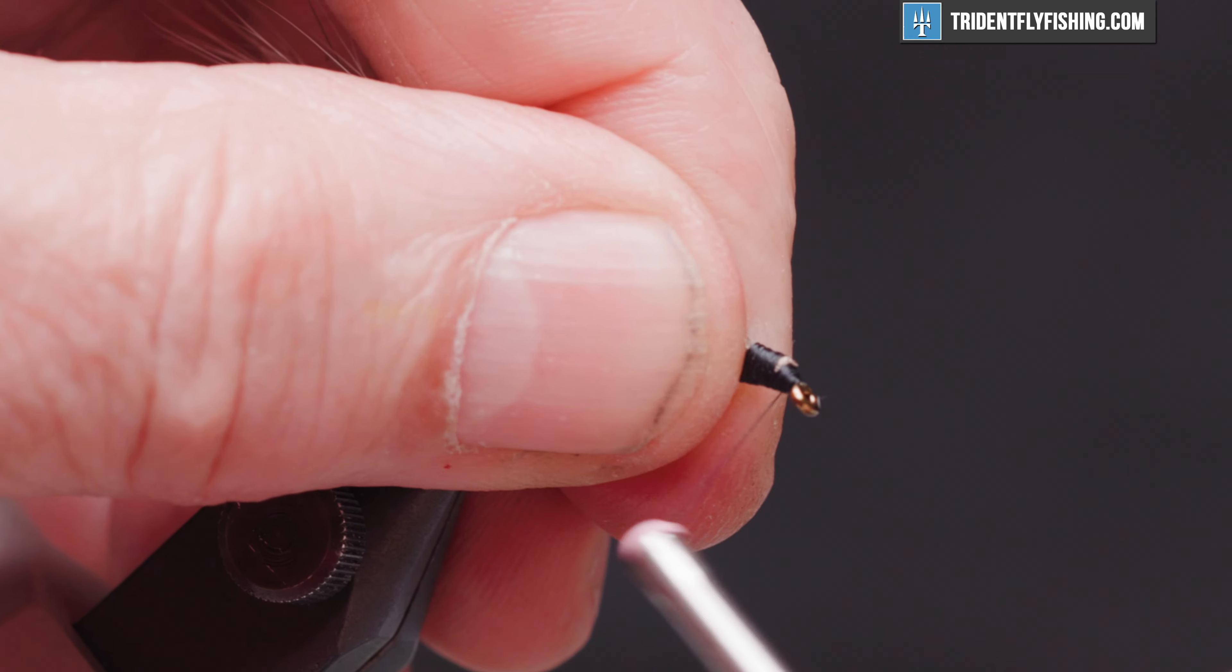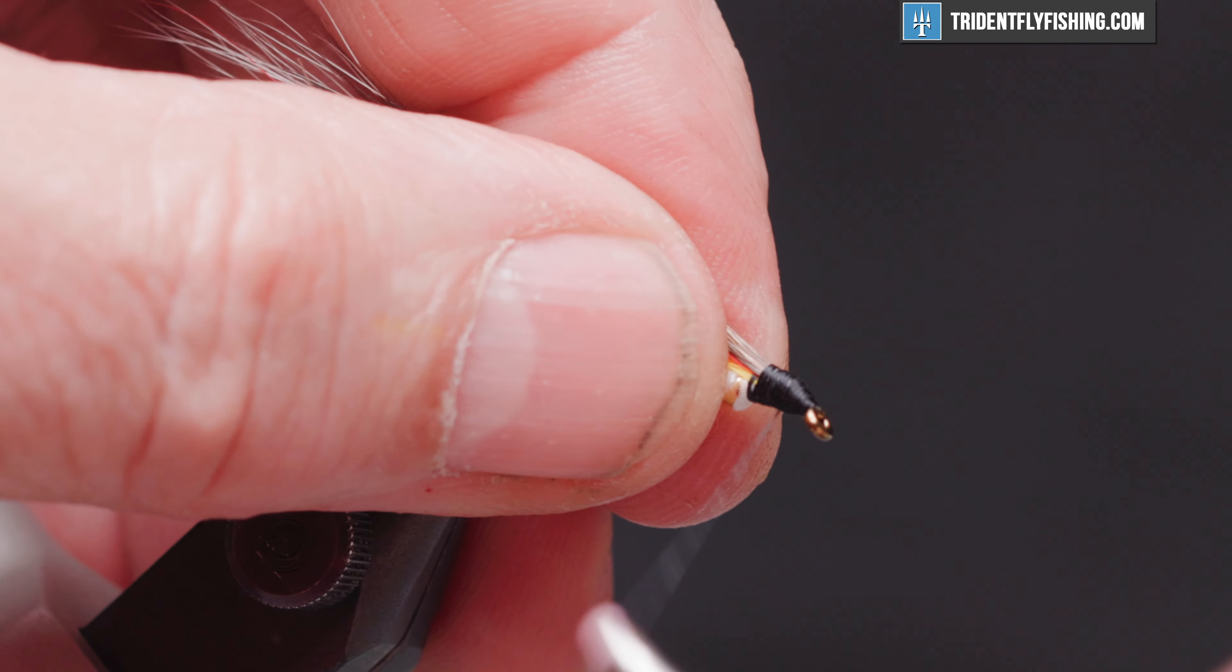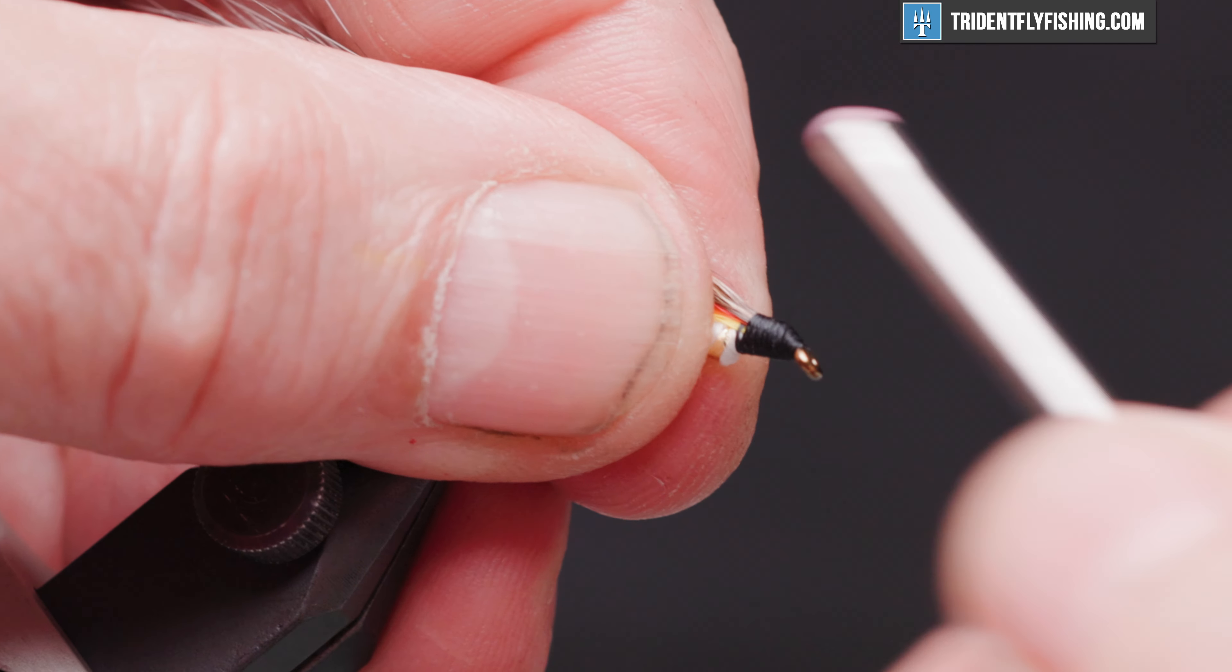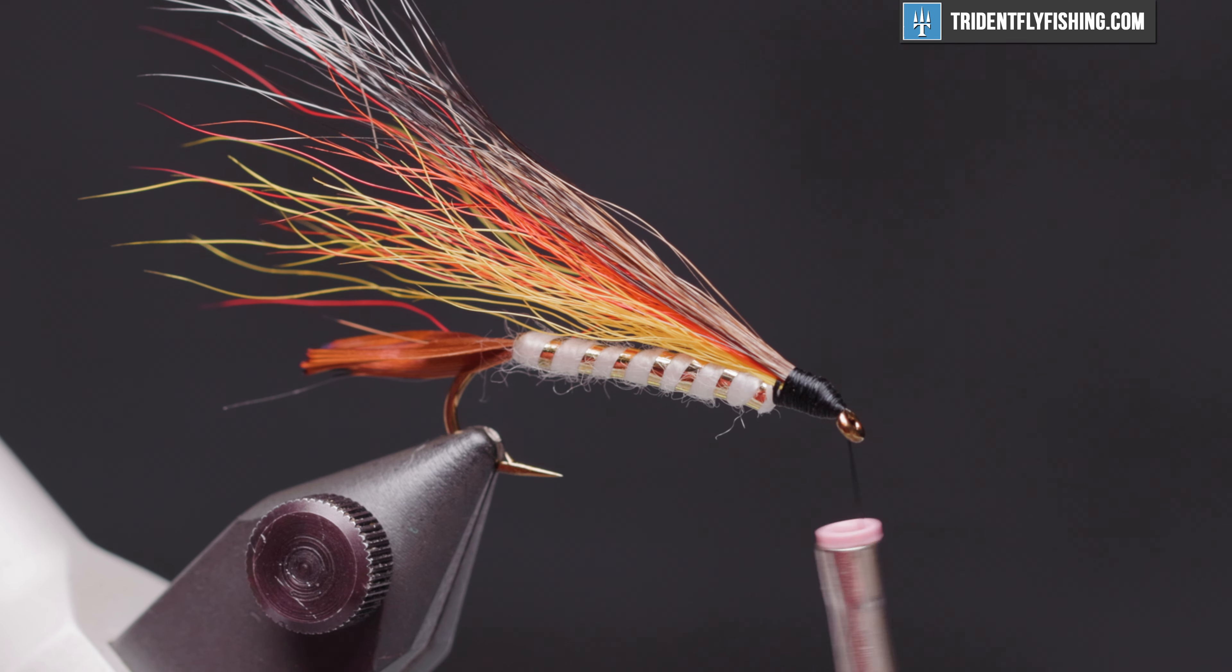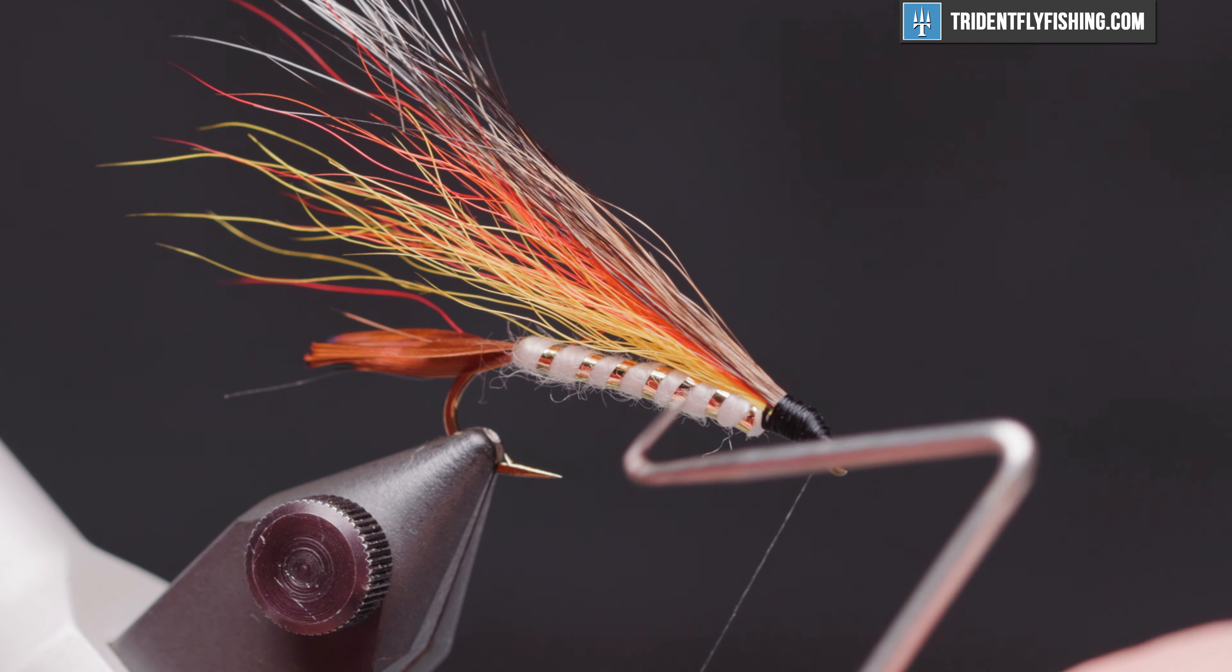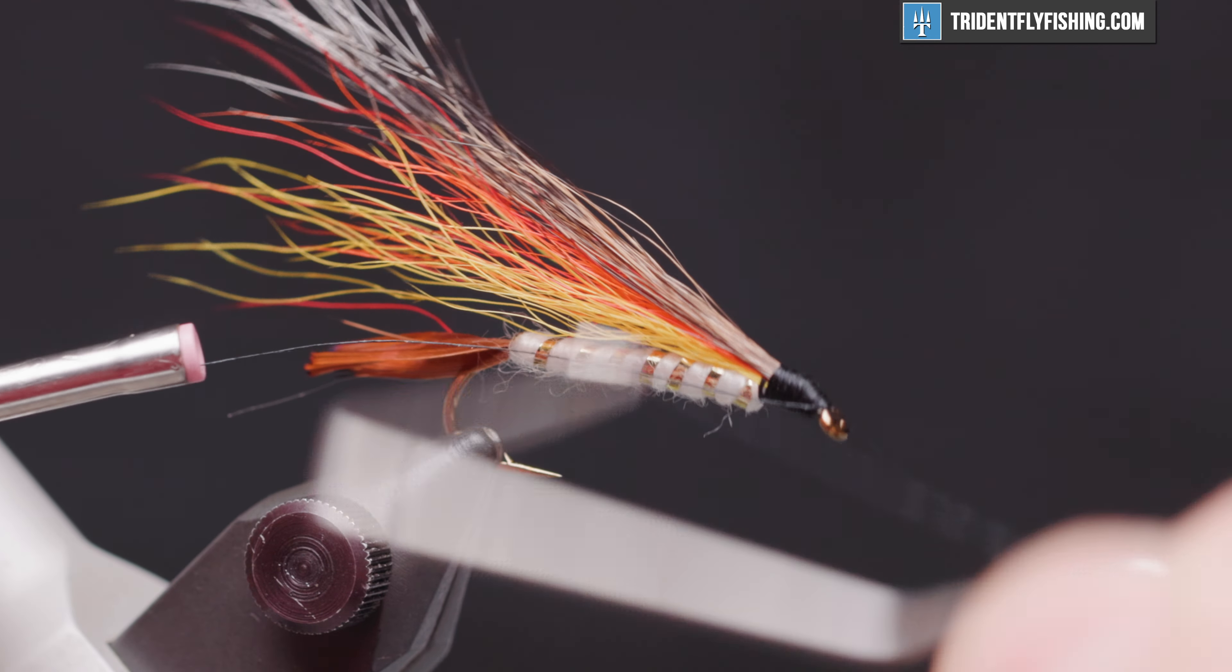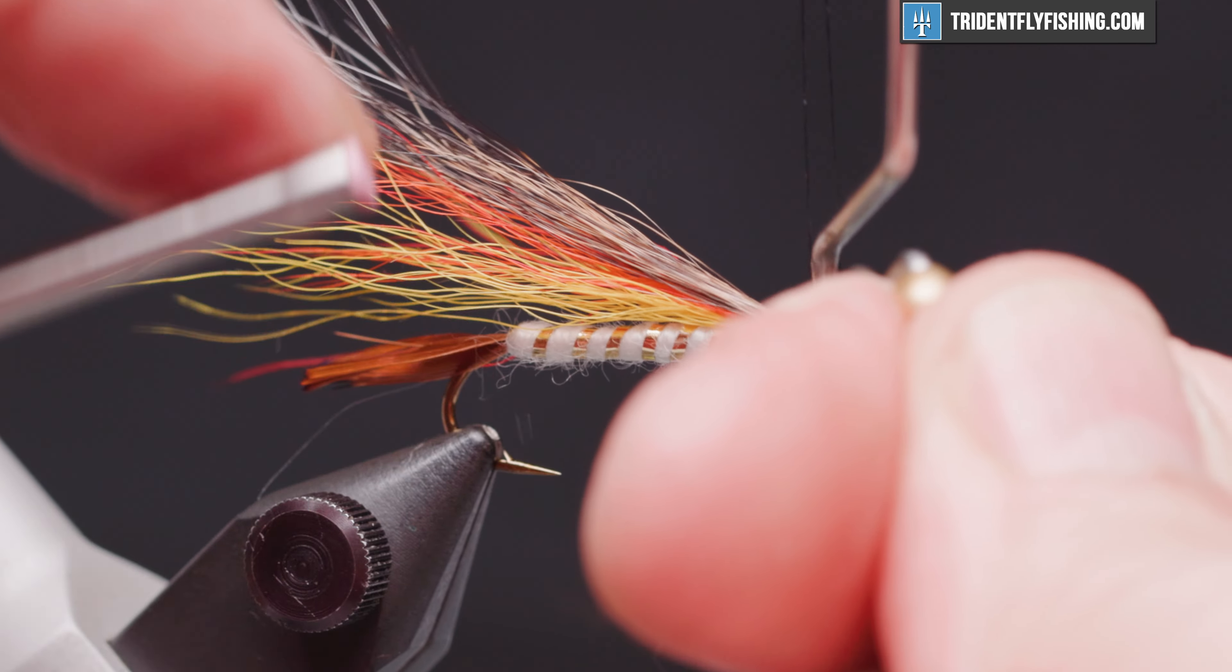Our thread to the eye. And start wrapping back. Cover all the material. And you're satisfied with the shape of the head. All the material is covered. Take out our whip finish tool.